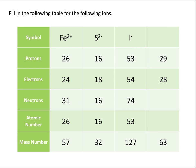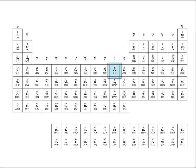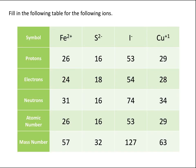Moving to our last example: something with 29 protons must have an atomic number of 29. If it also has 28 electrons, it has one less electron than protons, so it must have a positive 1 charge. Looking up atomic number 29 on the periodic table tells us this must be a copper 1+ ion. We calculate the number of neutrons by taking the mass number, 63, minus the number of protons, or atomic number 29, to come up with 34 neutrons.